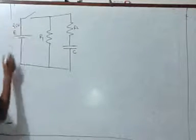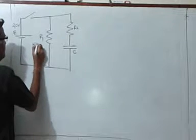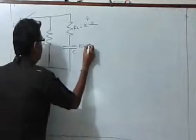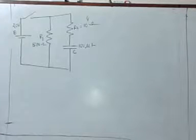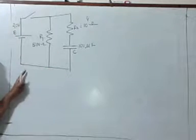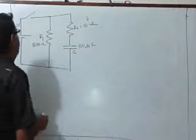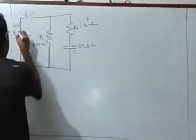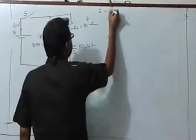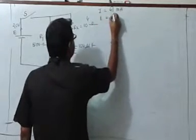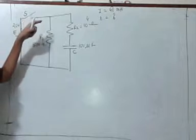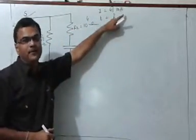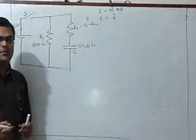E is 20 volts, R1 is 500 ohms, R2 is 10 raised to 4 ohms, and the capacitance C is 100 microfarads. We are supposed to find, after how much time after the switch has been closed, the current drawn by the battery becomes 41 mA.